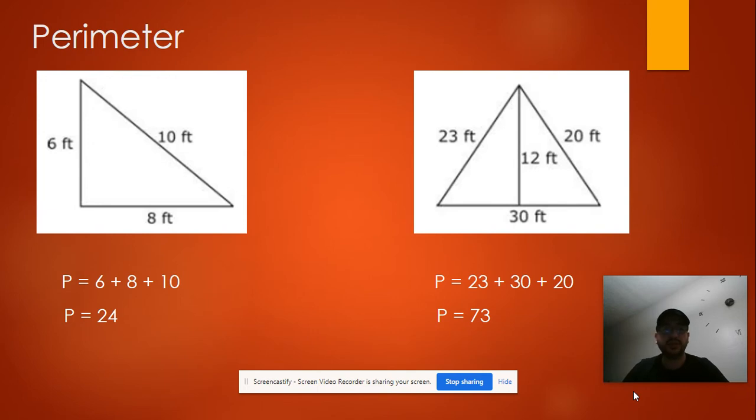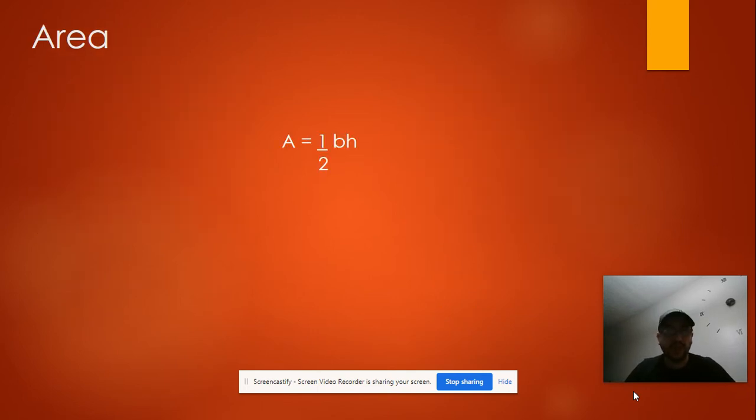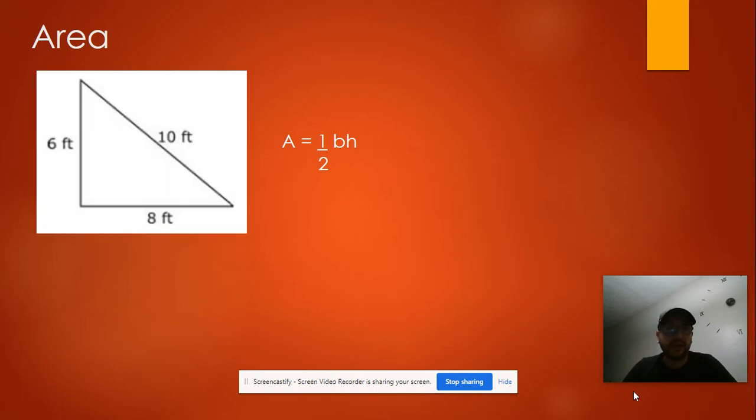Now, let's see some examples of the area. For the area, we need to use the formula for the area of the triangle, which is 1/2 base times the height.